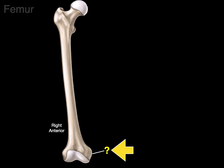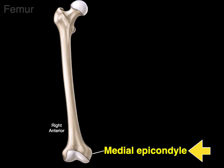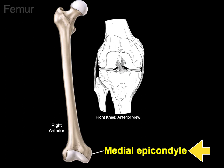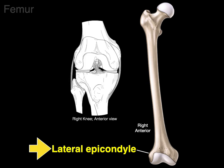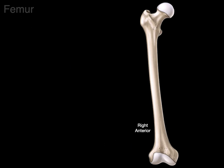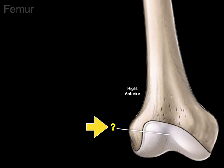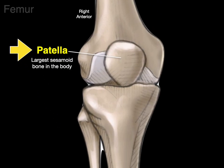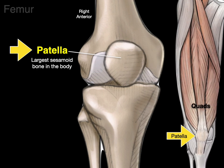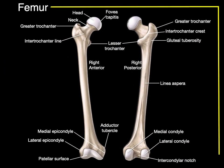Above the medial condyle is the medial epicondyle. Looking at an anterior view of the knee, there's the medial collateral ligament — also called the tibial collateral ligament — which attaches to that medial epicondyle. We also have a lateral epicondyle, and the lateral collateral ligament, also called the fibular collateral ligament, attaches to that lateral epicondyle. On the distal front of the femur there's a patellar surface where the patella sits. The patella is the largest sesamoid bone in the body, forming within the tendon of the quadriceps femoris muscle group, whose tendon inserts on the tibial tuberosity of the tibia. And that, my friends, is the femur in a nutshell.